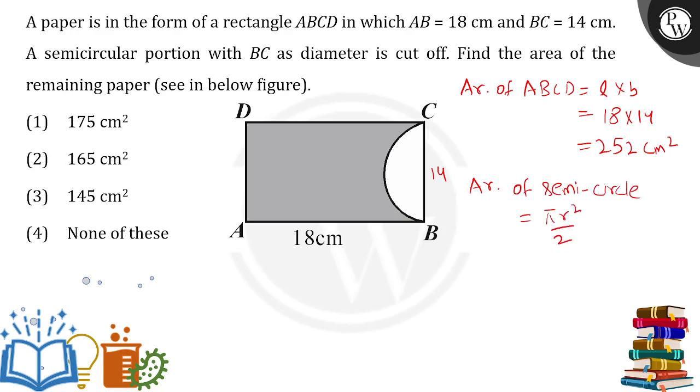And since this is 14, the radius will be 7. Simply recording the radius: that is 22 by 7 into 7 into 7 by 2. To cancel out, this goes 11, 7 cancel out 7 over here. This comes out to be 77.